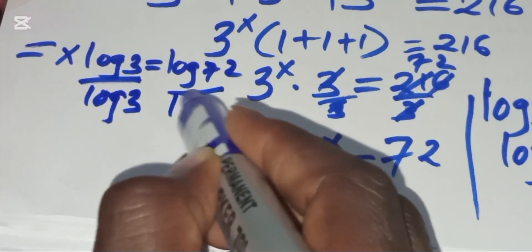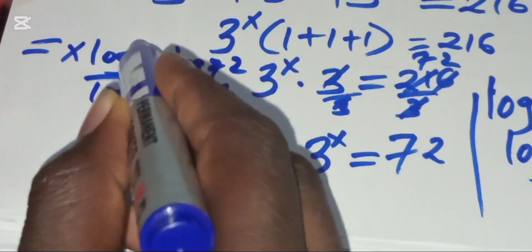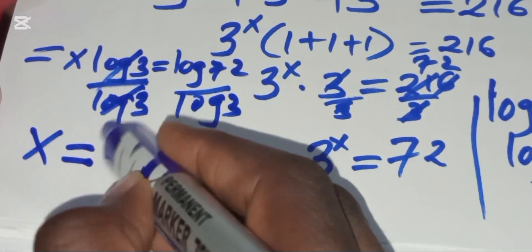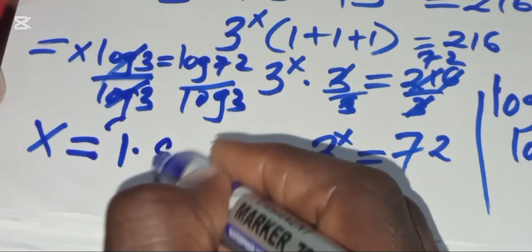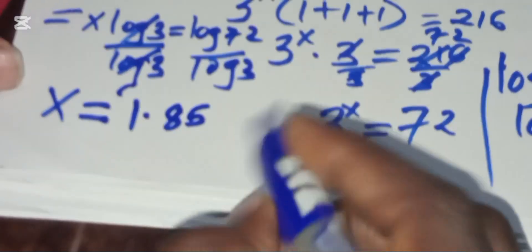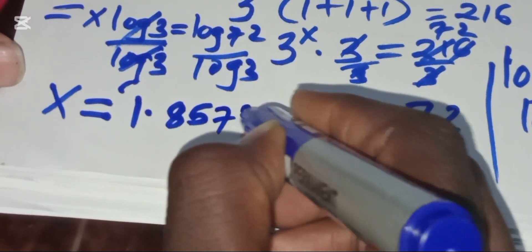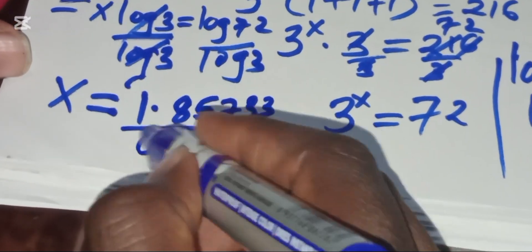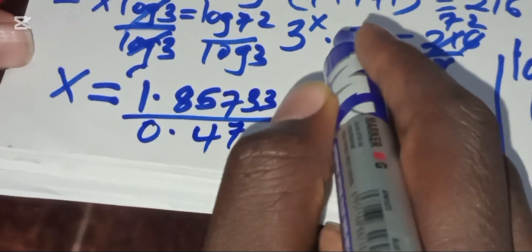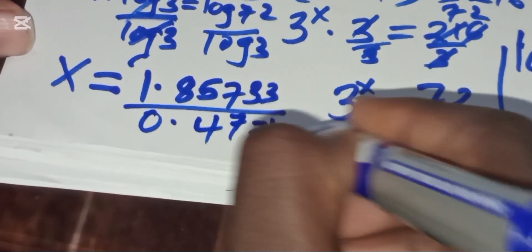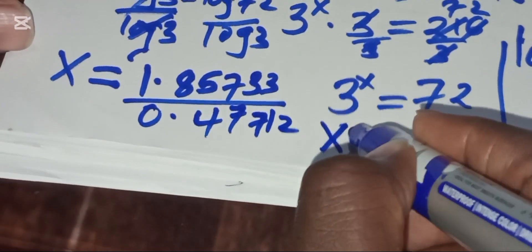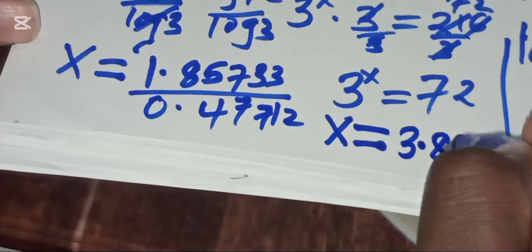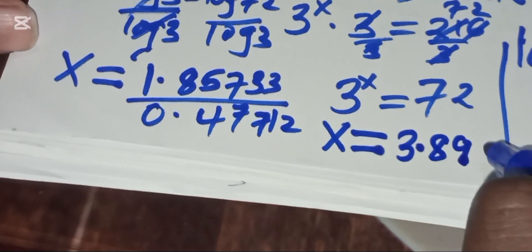We divide both sides by log 3, so x equals log 72 divided by log 3. Log 72 is approximately 1.85733, and log 3 is approximately 0.47712, and that gives us x approximately equal to 3.8927.